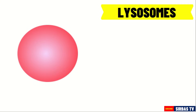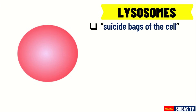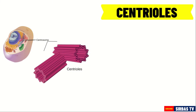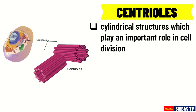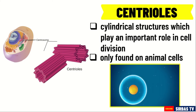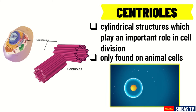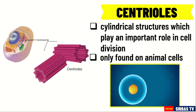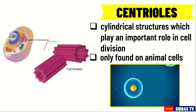Lysosomes are known as the suicide bags of the cell. Lysosomes act as the waste disposal system of the cell by digesting or breaking down the trash or unneeded materials in the cytoplasm. Next are centrioles. Centrioles are cylindrical structures which play an important role in cell division. These structures can only be found in animal cells. Cell division is important in animal cells because it enables the organisms to produce new cells needed for the production of new organisms, growth, and maintenance.